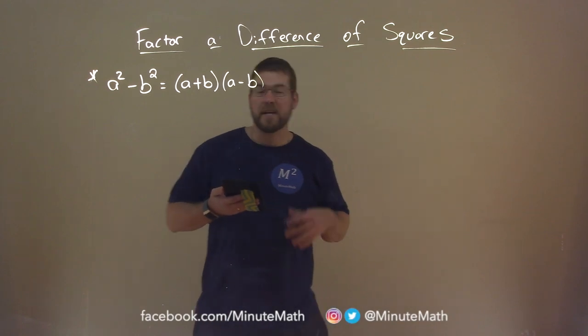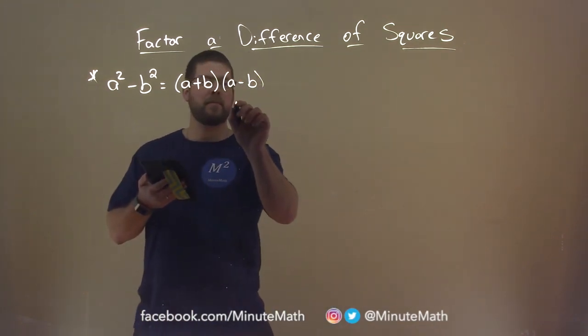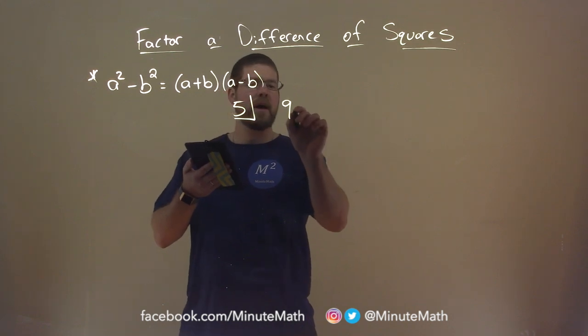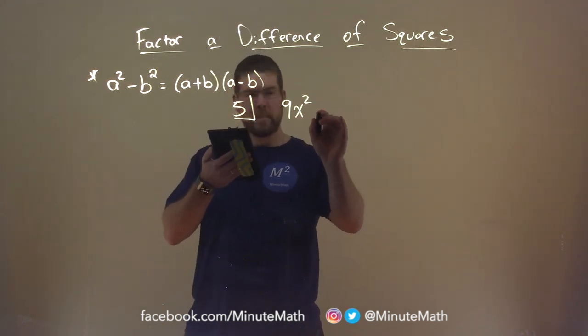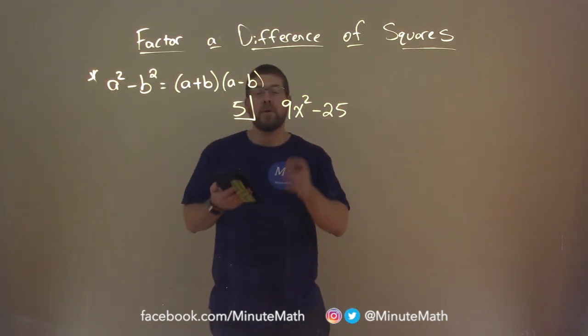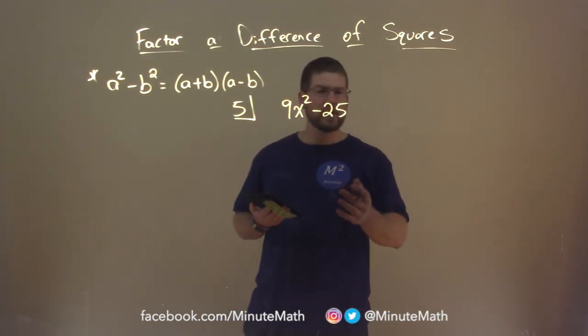So let's dive in with an example here, example 5. Let's say we're given 9x squared minus 25, and we want to use the difference of squares. First, we have to see if we can.